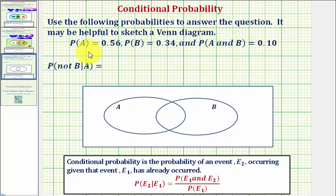We're given the probability of A equals 0.56, the probability of B equals 0.34, and the probability of A and B equals 0.10.